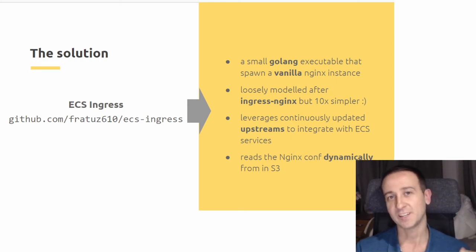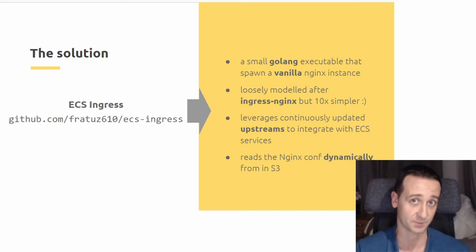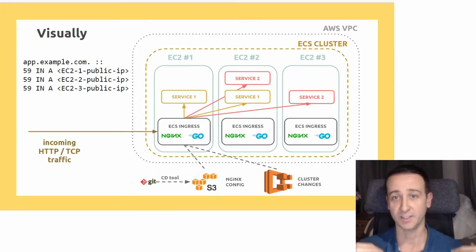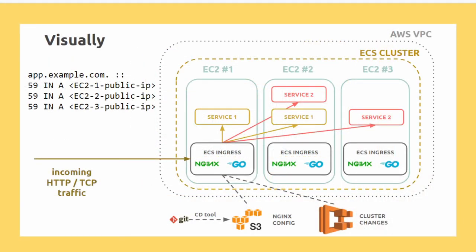Under the hood, ECS Ingress leverages a continuously updated upstreams configuration file that it updates with ECS service changes. It also reads a configuration bundle from S3 and updates automatically as that configuration gets updated. Looking at the architecture diagram: at the top you have a traditional AWS VPC with your ECS cluster — in this case three instances, each with a public IP reachable by the internet. Each instance is running ECS Ingress as a daemon, so there's one instance per server in the cluster, running in host networking mode.